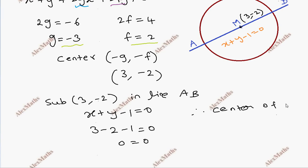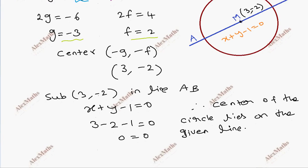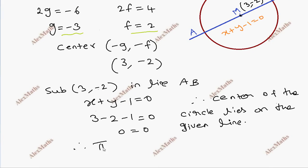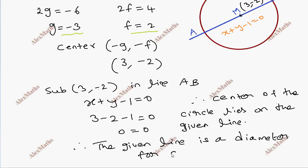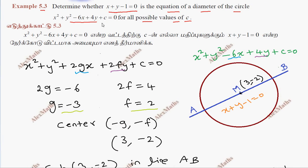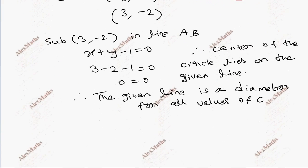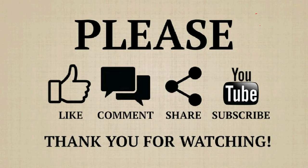Therefore, the center of the circle lies on the given line, and the given line is a diameter. Therefore, the given line is a diameter for all possible values of c.